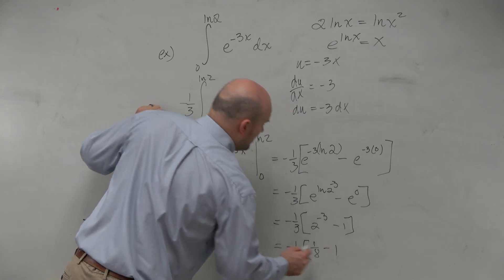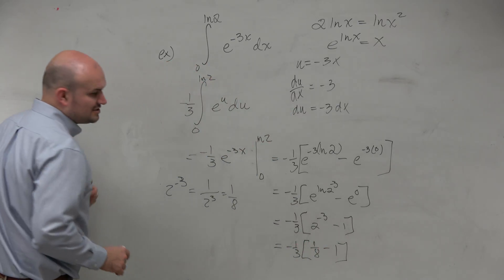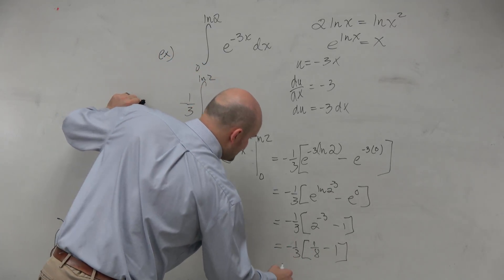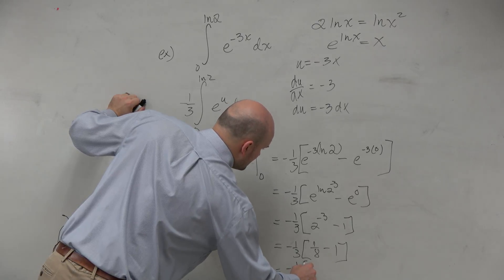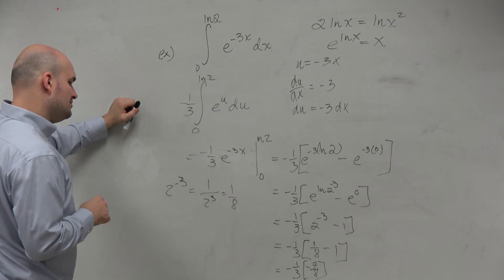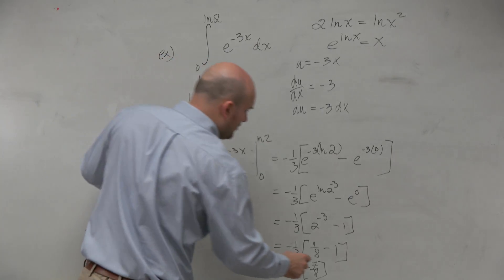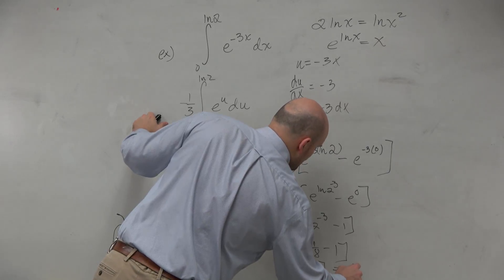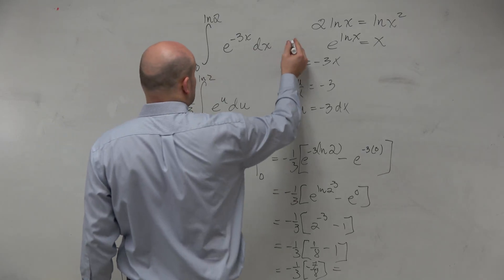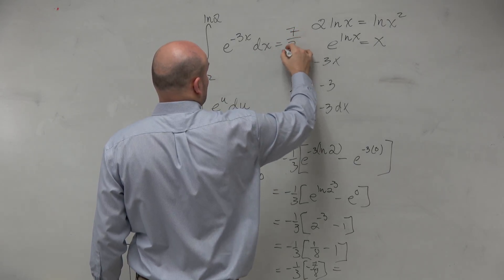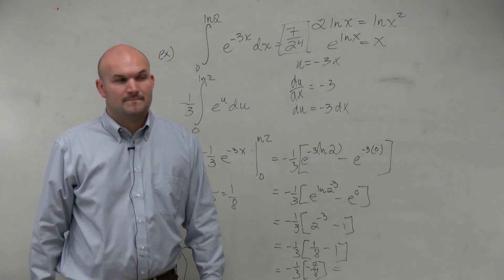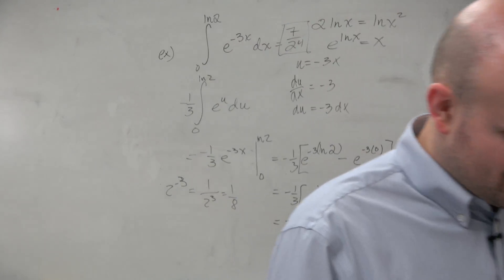1 over 8 minus 1. 1 over 8 minus 1, ladies and gentlemen, is going to be negative 7/8. And then you multiply straight across, and you would get a positive 7/24, which I'm just going to write so here is my final answer, which would be a positive 7/24. Kind of cool, huh? No? OK.